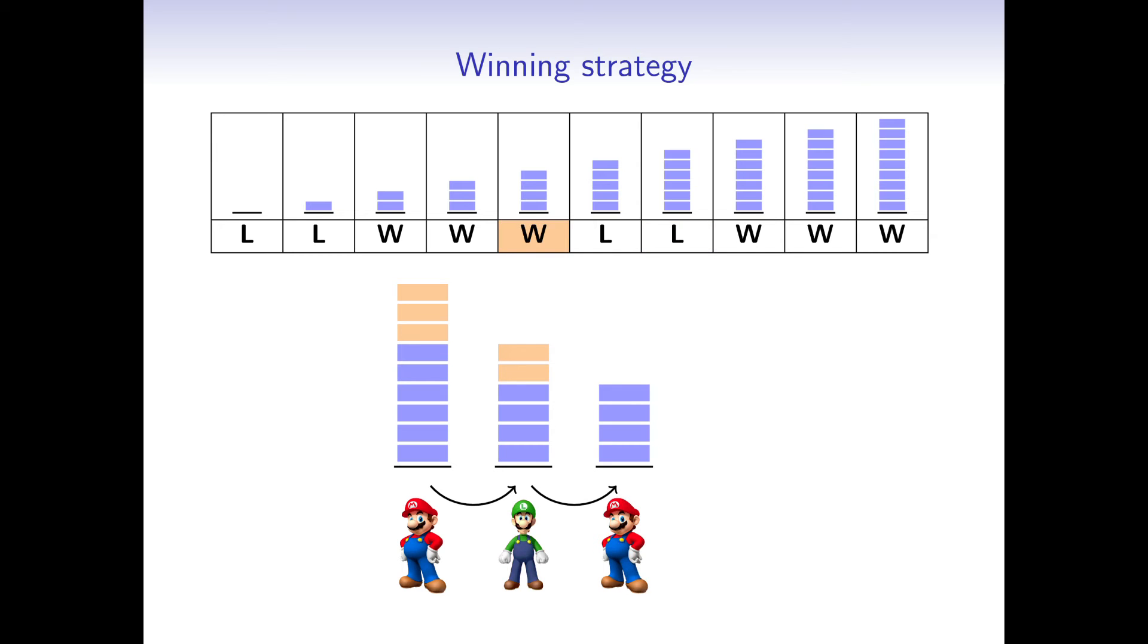Now Mario will again choose a move such that Luigi ends up on a losing state. So he chooses to remove 3 blocks. And Luigi ends up with a pile with only 1 block and loses the game.